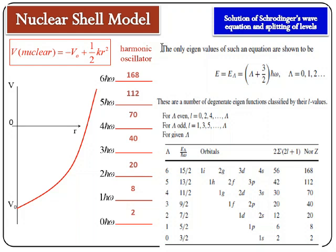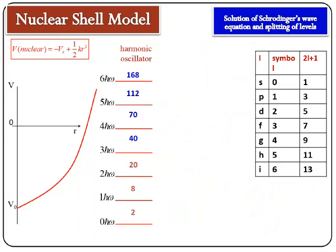For λ = 2, since it is an even number, there are two permissible values of l: 0 and 2. So the 1d and 2s orbitals are permitted. The 1d orbital can accommodate 10 nucleons and 2s can accommodate 2 nucleons. So up to this level, 12 + 6 + 2 = 20 nucleons can be accommodated. The fifth column gives the value of N or Z. You can see that only the magic number up to 20 can be reproduced with the harmonic oscillator potential.